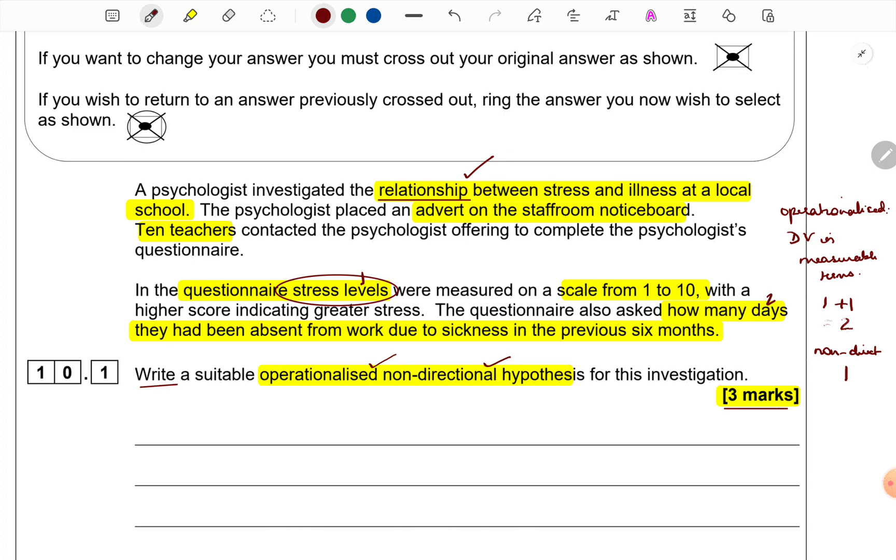Here, you can see actually where they have given the aim of the study which you come to know from the word investigated that this is the aim. You can see clearly the variables are specified relationship between stress and illness. However, why I have pointed out below is because we need operational definition. So, stress levels is stated below and days of absence from work due to sickness. That is taken as operationalization of illness. So, we will speak about stress levels and sickness rather than stress and illness because they want an operationalized hypothesis.